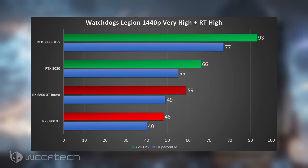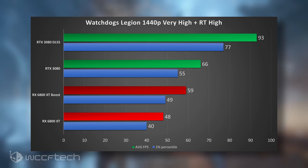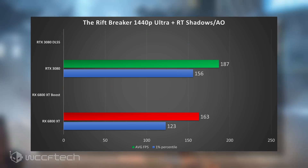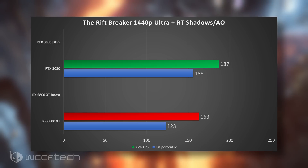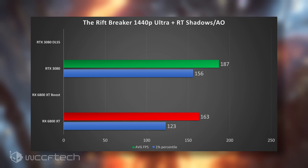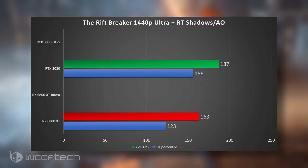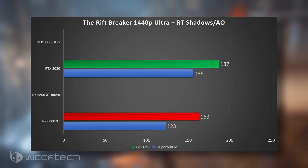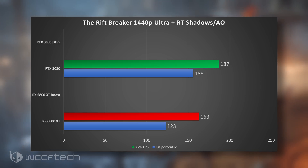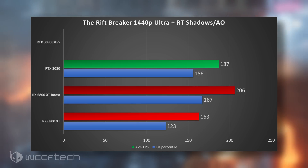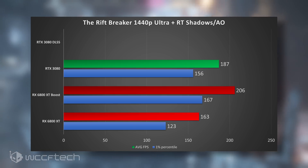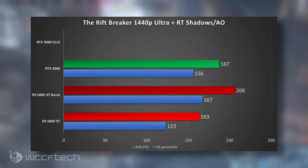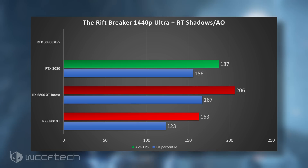Moving into The Rift Breaker, this is where we see the biggest performance jump. You're already running this game very fast anyway, but you do get a 26% increase, and that actually puts the 6800 XT ahead of the 3080 in this particular title.